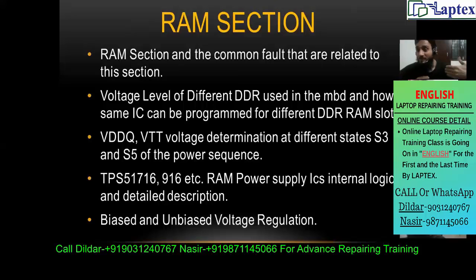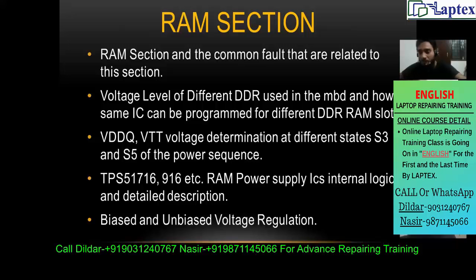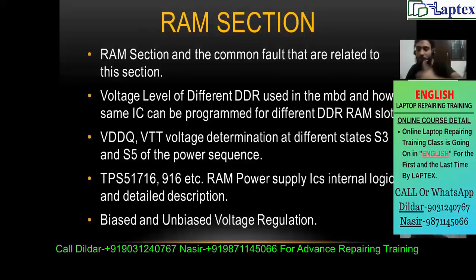That was the S5 state. Now we move to the S3 state — the RAM section. We'll discuss RAM section common faults, and voltage levels of different DDRs: DDR2, DDR3, DDR3L, DDR4, each with different voltage levels. A single IC can be used for different DDR RAMs by biasing — manipulating its working. It can be used for 1.5V, 1.8V, or 1.08V. We'll also cover different RAM supplies: VDDQ and VTT, determined by S3 and S5 states.